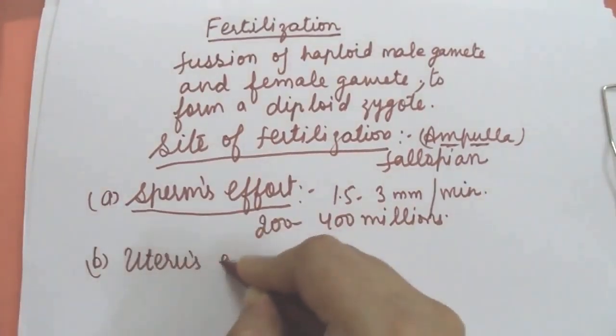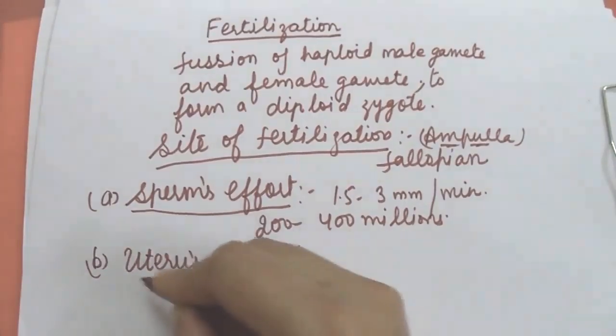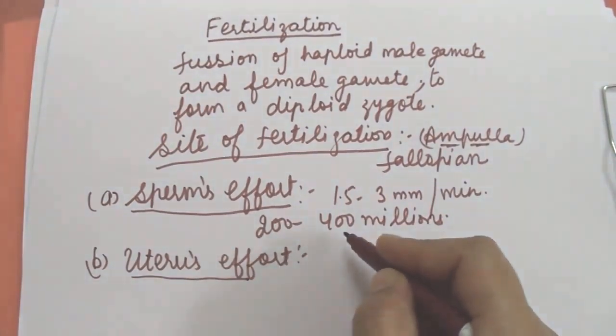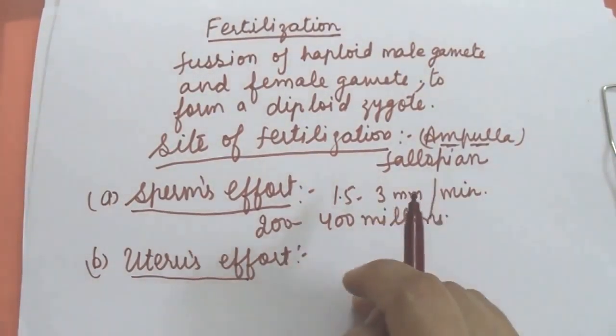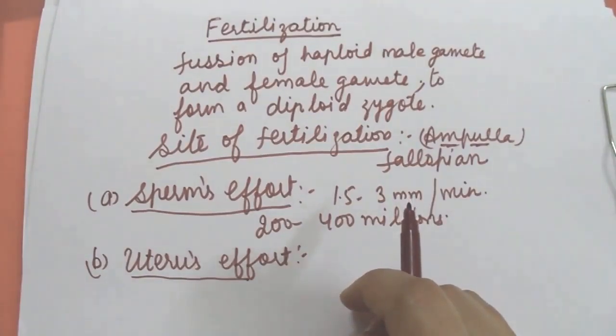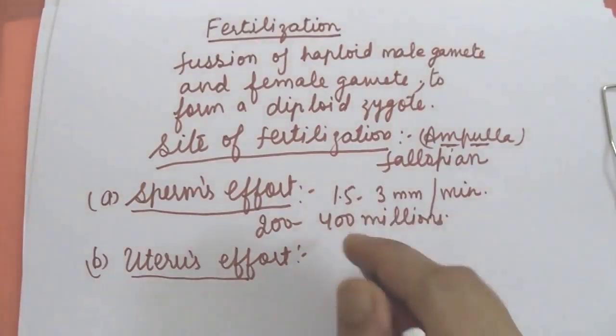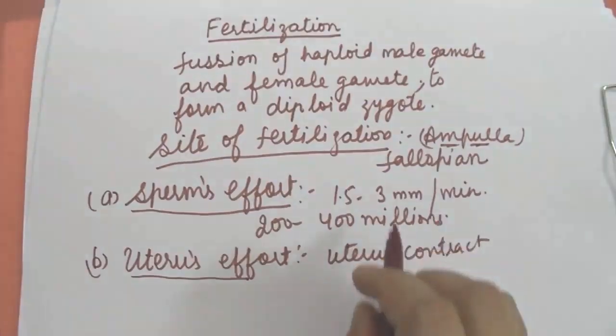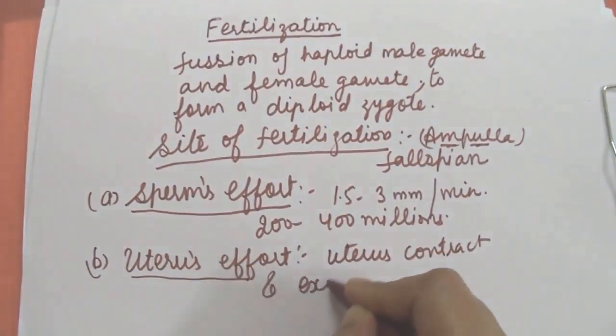Now second part is uterus efforts. What is the effort of uterus in fertilization? Certain activities of the female reproductive tract help the sperms to reach up to the site of the fertilization. For example, extension of the cervix into the vagina helps the semen into the uterus from the vagina. And the contraction of the uterus and fallopian tubes propel the sperms upward. Uterus will contract or expand, and sperms have to travel in the uterus.